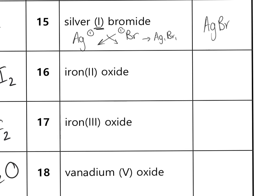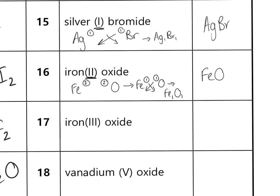Iron(II) oxide: Fe and O. Iron has a valency of two (from brackets); oxygen is in group six, also valency two. Cancel the ratio 2:2 down to 1:1, then swap and drop to get Fe¹O¹. Ignoring the ones, the formula is FeO. Iron(III) oxide is different: iron still Fe, oxygen still O, but now iron's valency is three and oxygen's is two. That can't cancel down, so swap and drop gives Fe₂O₃.